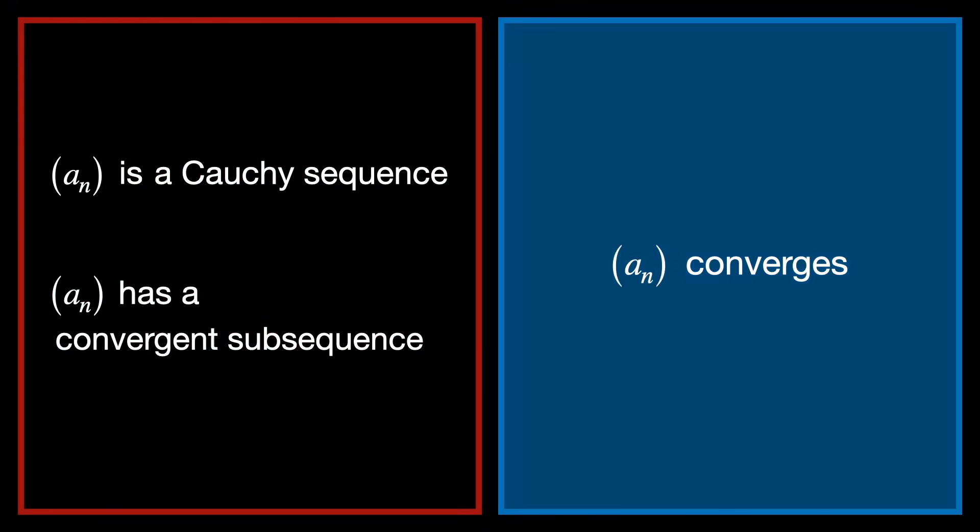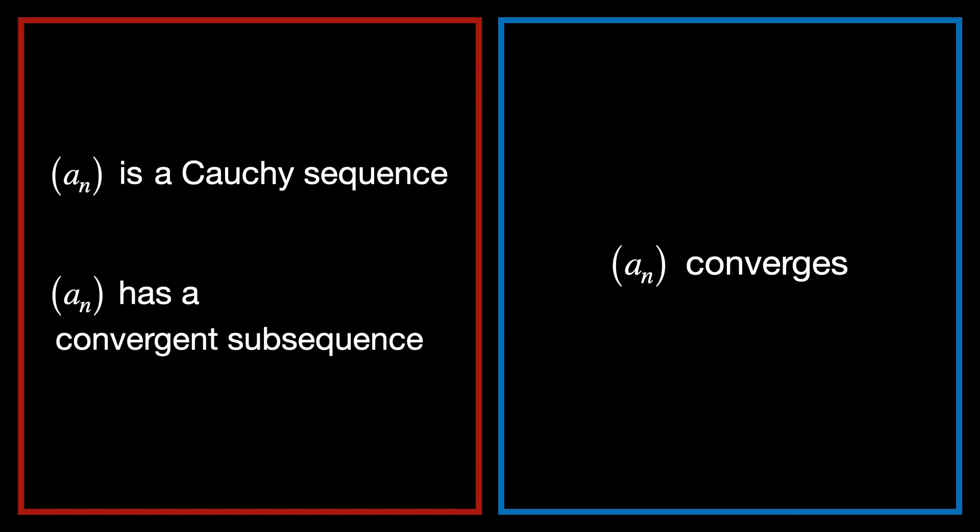We therefore change our target to that of proving that a sub n converges. The statements that we can assume are all on the left side, while the statements we're trying to prove are on the right side. Basically, just ask yourself, given what's on the left side, what can I do to get what's on the right side?